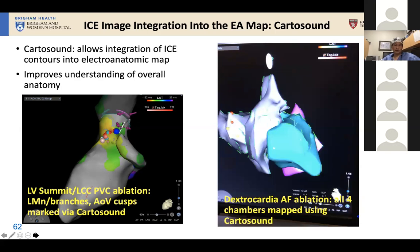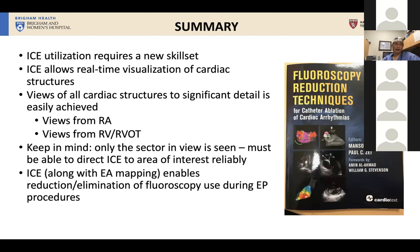To wrap up: ICE utilization requires a new skill set, and we went through some of that. ICE uses real-time visualization of cardiac structures — really the only modality we currently have to do that. Views of all cardiac structures to significant detail can be achieved from basically two locations — the RA or within the RV slash RVOT. We have to keep in mind that we only see one 2D plane, one sector, so we need the skill set to move the catheter around and know where to go. ICE, along with mapping systems, really helps us get to that point and allows us to either reduce or eliminate fluoroscopy during our EP procedures.